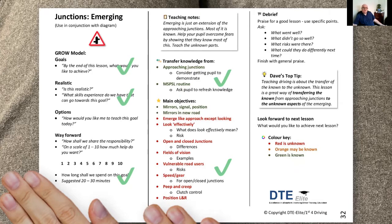I normally include Dave's top tip, which are generally about teaching in general rather than just this specific lesson — some information, skill, or advancement. In this lesson on junctions emerging, it's a great way of transferring information from known to unknown, since a lot of the junctions approach content is similar to junctions emerge. Then looking forward to the next lesson is a prompt to ask the pupil what we're likely to do next week.